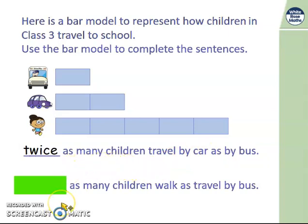Let's look at the next one. As many children walk as travel by bus. So here we have walking so quite a lot of children walk and here we have a bus. So how many more times do children walk than travel on bus? So we can say 1, 2, 3, 4, 5, five times as many children walk as by bus. Because there are five more there. Well done.